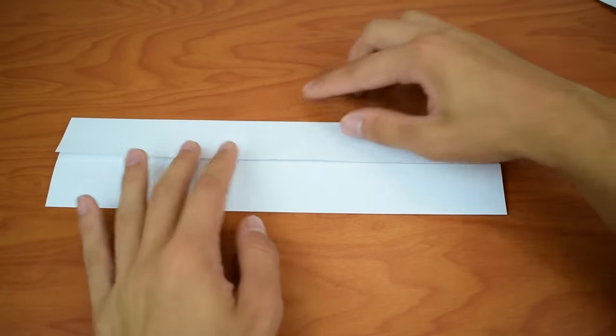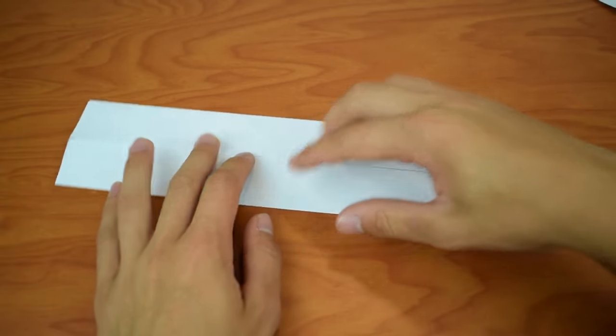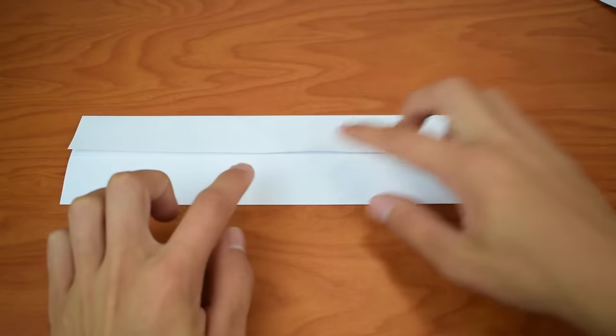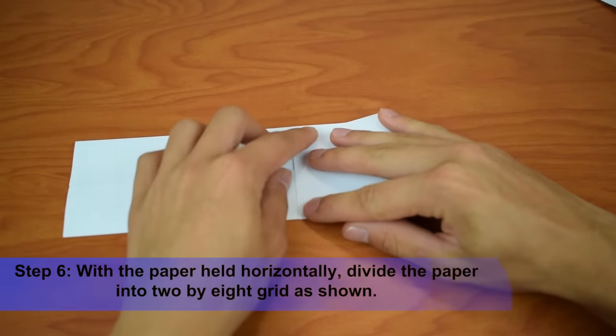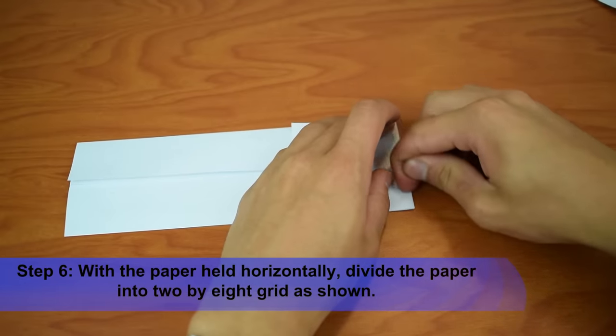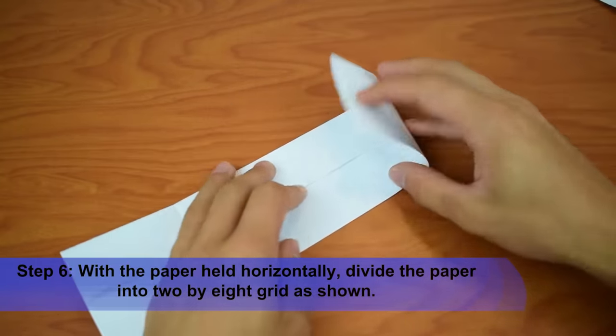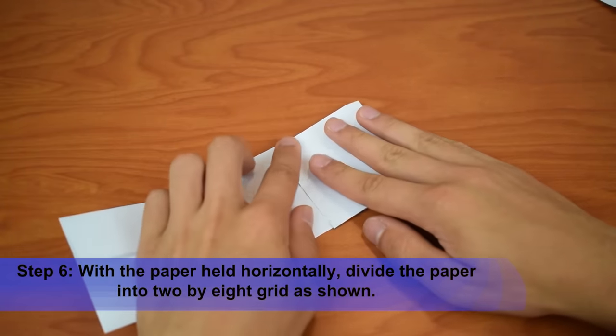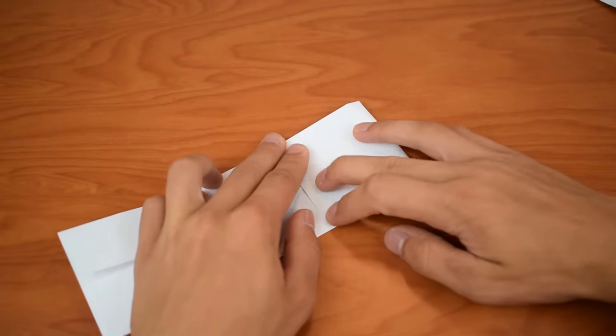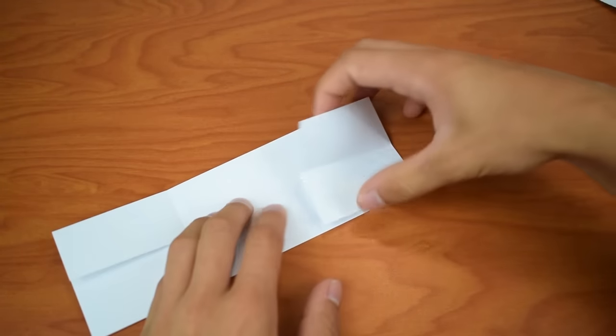And you'll notice from a previous step that there's a crease running down the center right here. What we're going to do is we're going to fold both of these edges, the far edges, into that center crease. And when you're done folding, unfold those.